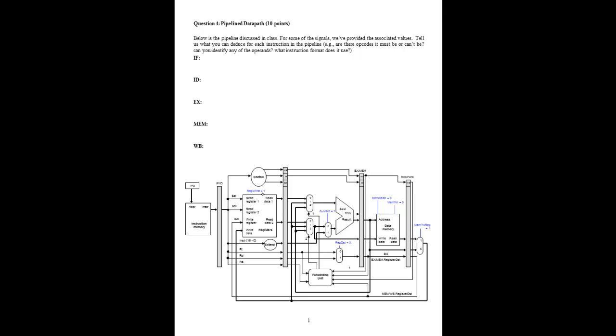What we know about the write-back stage is the instruction that's there is writing a register. Also, since the mem-to-reg signal is 1, it's writing back into the register a value that came out of the data memory. So an instruction that read the data memory and is writing it back into the register file is some kind of load. In particular, we know that it's writing into register V0, so it's some kind of load whose destination is V0.